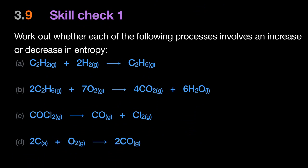Now solve these four practice problems — predict the delta S using basic data about moles of gas. Delta S is positive if entropy is increasing, negative if entropy is decreasing. First question: three moles of gas are becoming one mole of gas. The number of moles of gas is decreasing, so the entropy sign will be negative — a decrease in entropy.